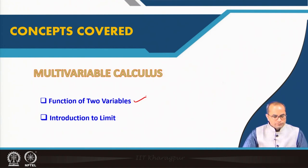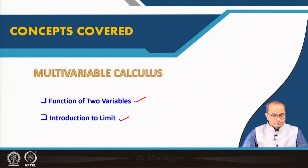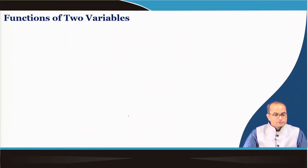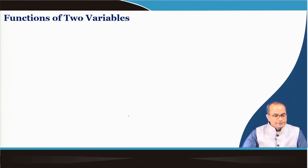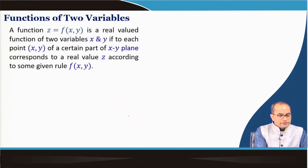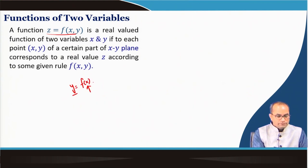It can be three or four variables, and then the introduction to the limit of the functions. Coming to the functions of two variables, we already have an idea of a function of one variable. What is the difference, and how will functions of two variables be defined? A function z is equal to f — so far we used y is equal to f, where y was a function of one variable x.